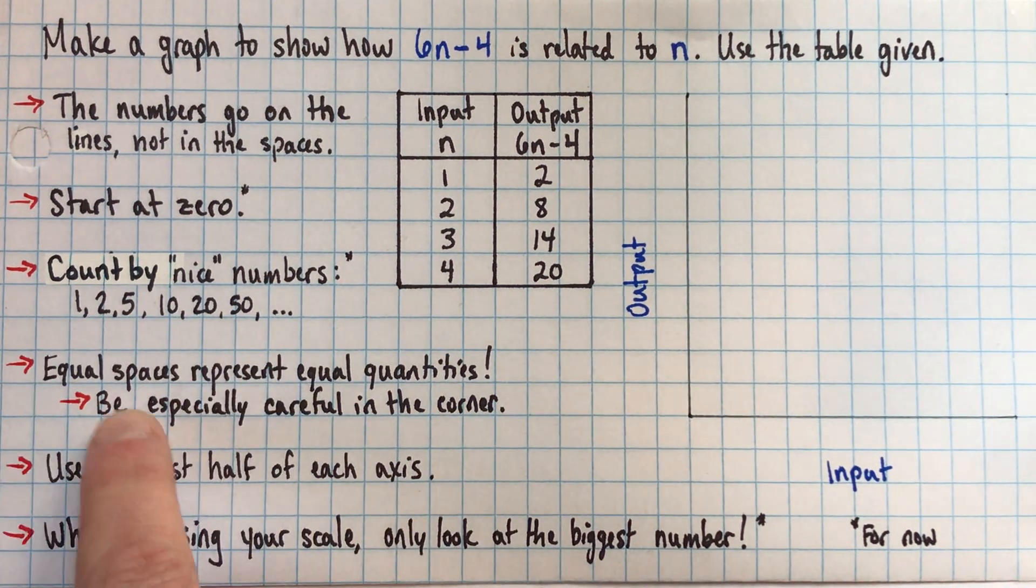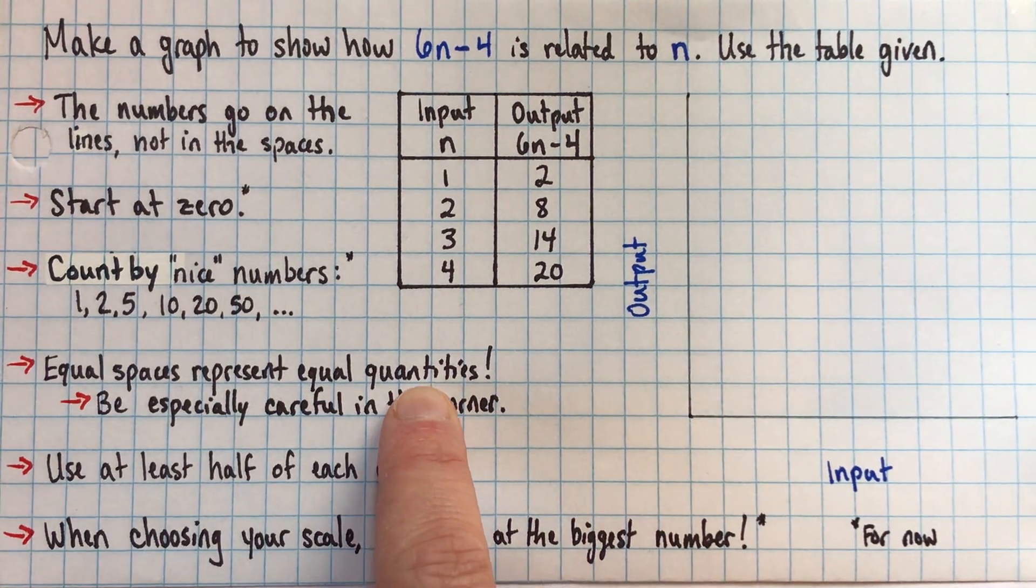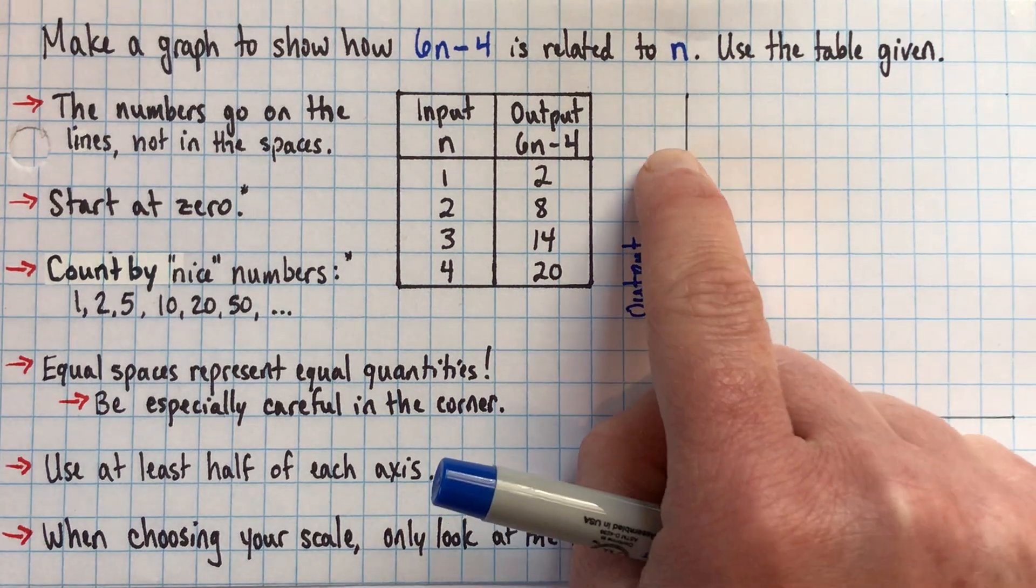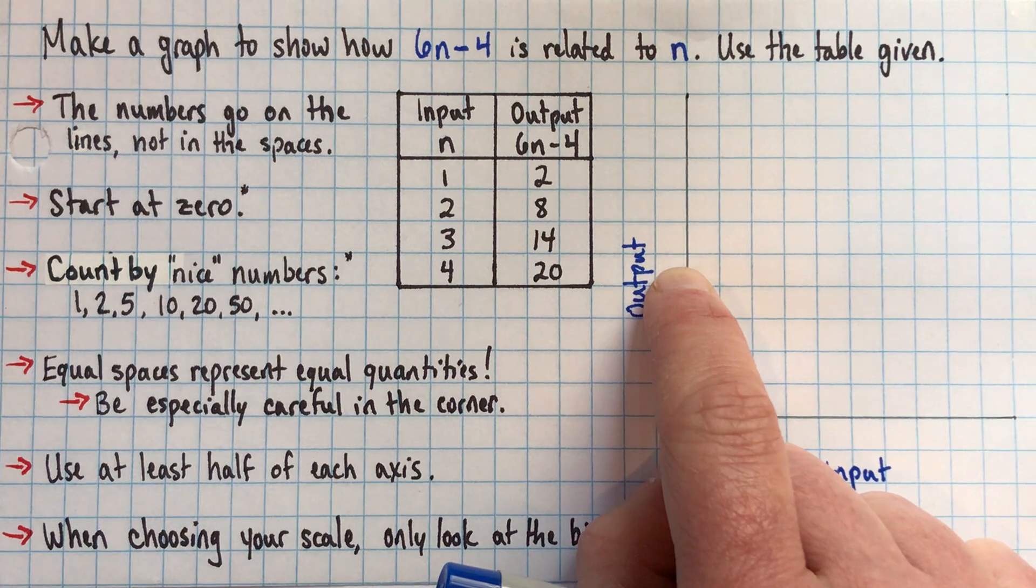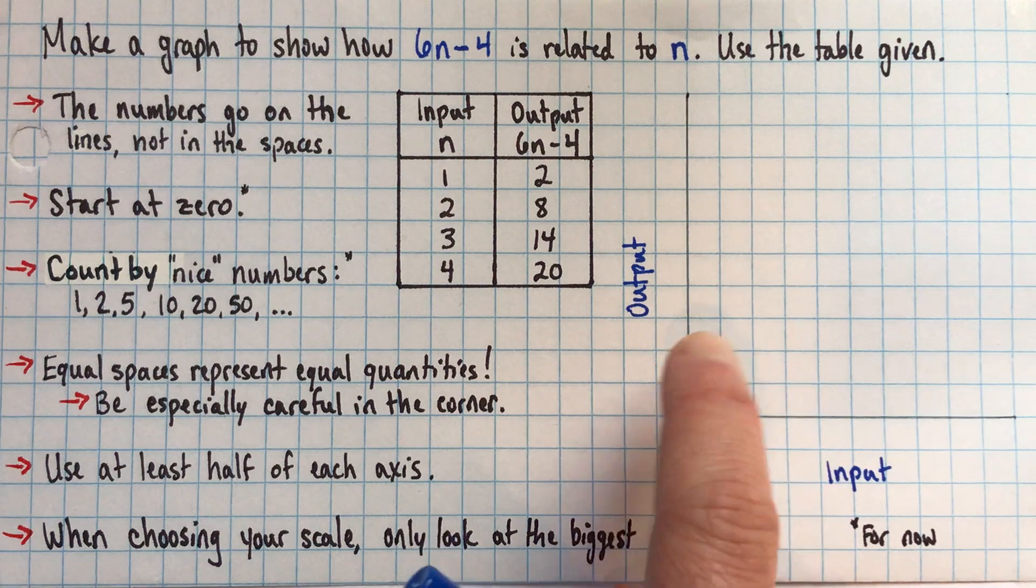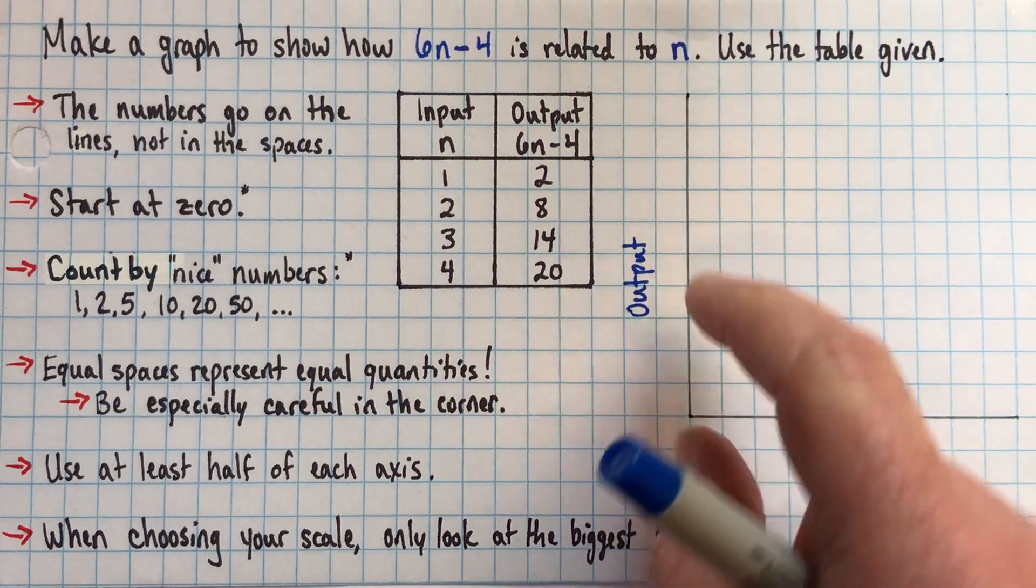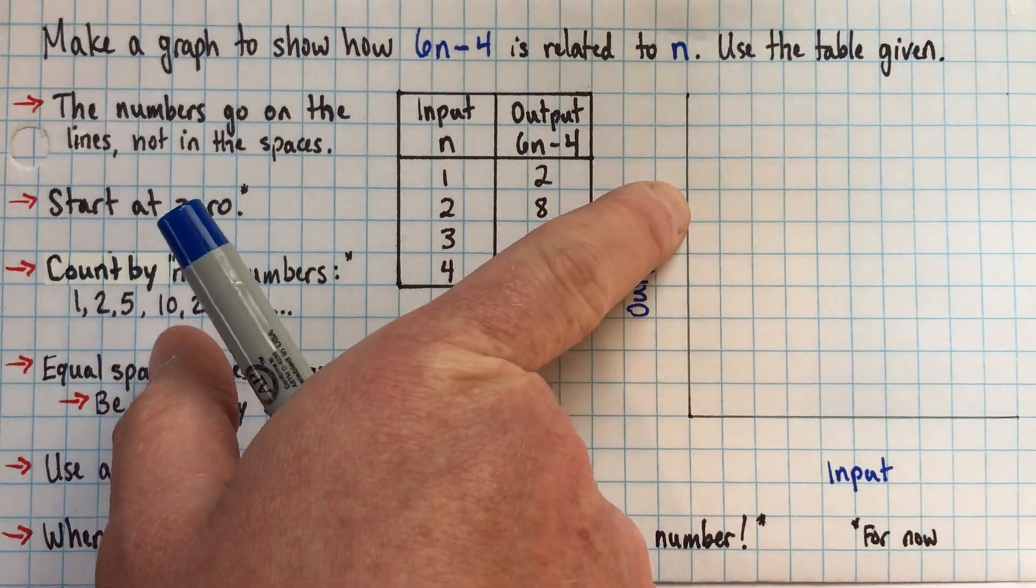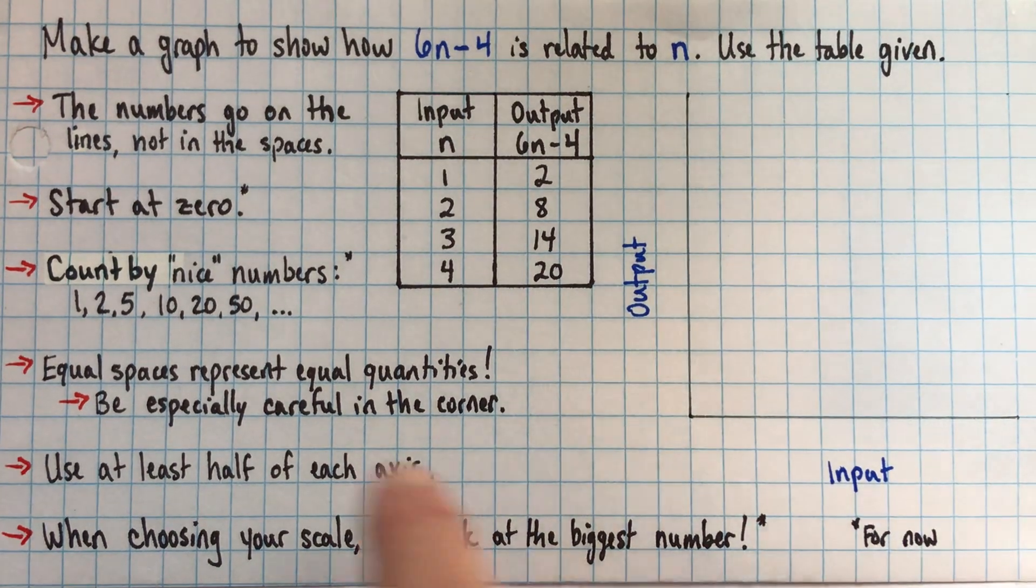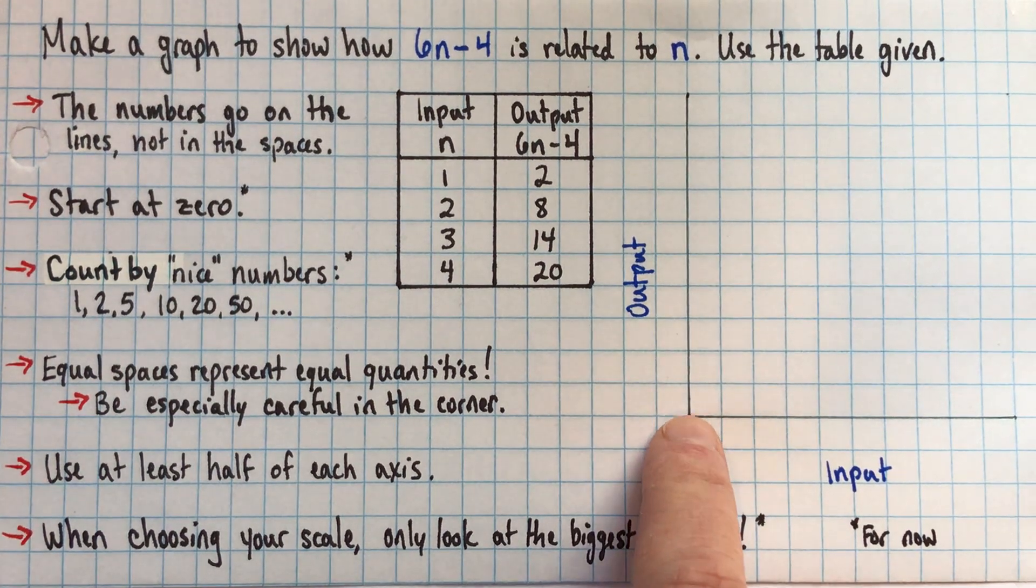This is a really important rule. Equal spaces have to represent equal quantities. So two squares here have to represent the same amount as these two squares here and these two squares here. Now one important thing is that two squares on the other axis can represent a different amount, that's OK, but on one axis, every square or every five squares or whatever has to always represent the same. And this is just a little tip: be especially careful in the corner. The most common place I see mistakes for that is right in the corner.